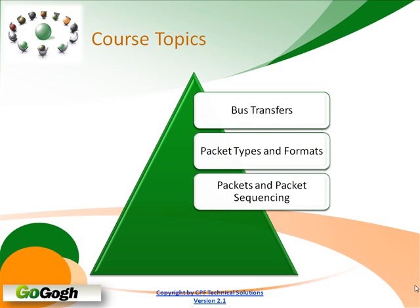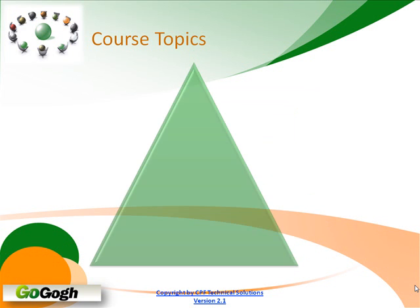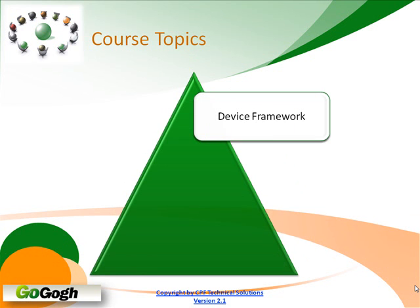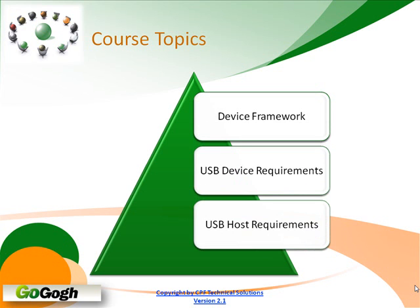We'll then look at how those packets are sequenced and how they make up the packet protocol. We will also look at devices — the device framework — what makes up a device and what the requirements of a device in USB are. For example, devices have to have a set of descriptors; we'll look at what those descriptors are used for and what information is in them. We'll also look at the requirements of devices from a standpoint of supporting the standard device requests and then possibly class-specific requests.